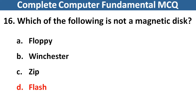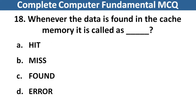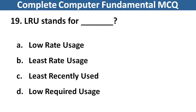What is the high speed memory between the main memory and the CPU? Right answer is option B, Cache Memory. Next question: Whenever the data is found in the cache memory it is called as dash dash. Right answer is option A, Hit. Next question: LRU stands for dash dash. Right answer is option C, Least Recently Used.